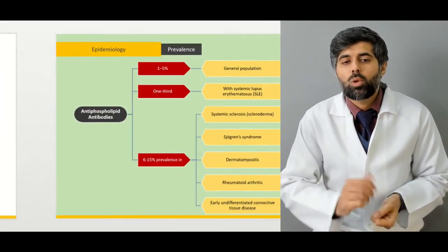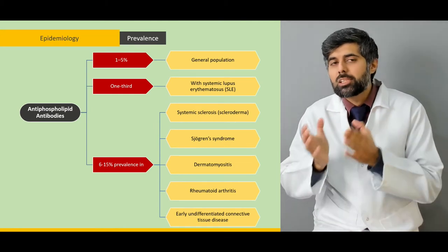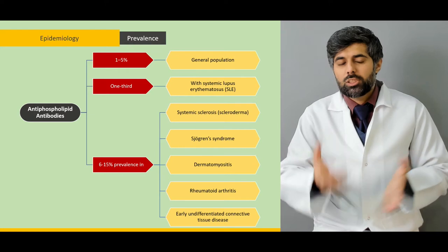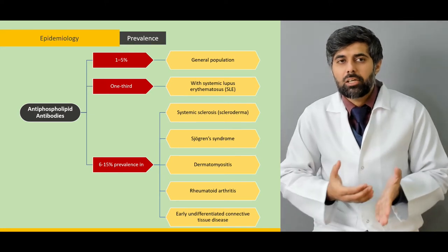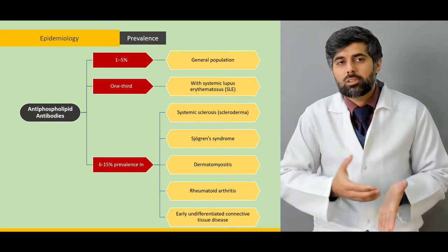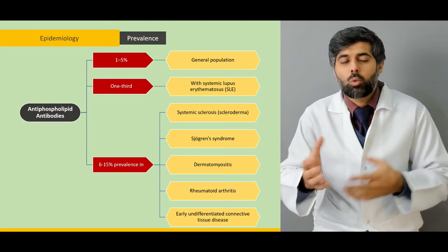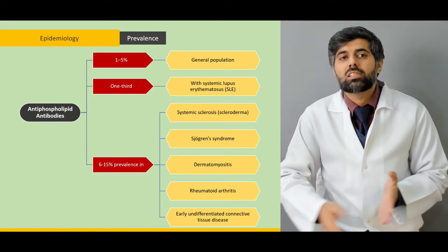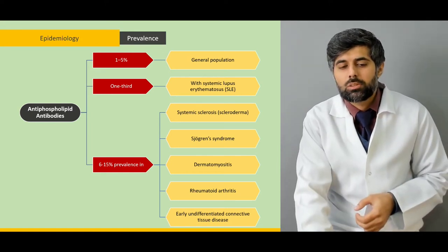Then we learn about its epidemiology and prevalence — what the primary and secondary differences are, what catastrophic antiphospholipid syndrome is, and what its prevalence is in other autoimmune disorders.